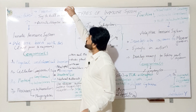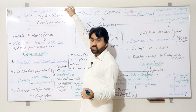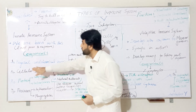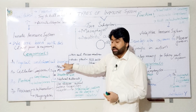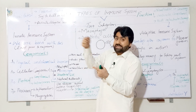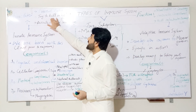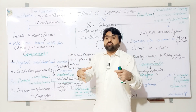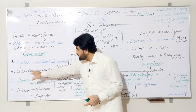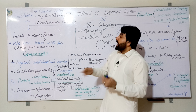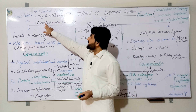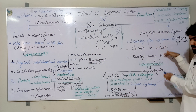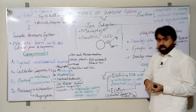The important functions of innate immunity include: first, preventing the entry of foreign invaders into the human host through physical and chemical barriers; second, if they enter the body, trying to kill or retard the growth of the foreign invader using these components; and finally, activating the adaptive immune system, which will be described later.